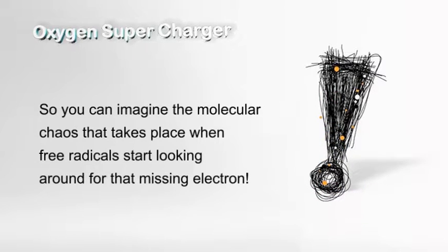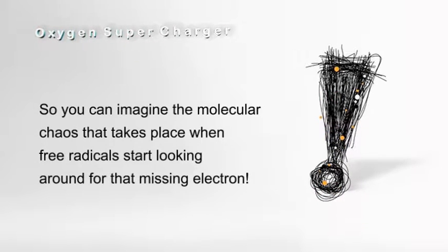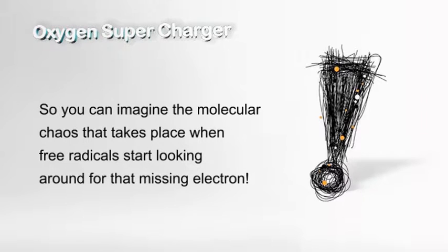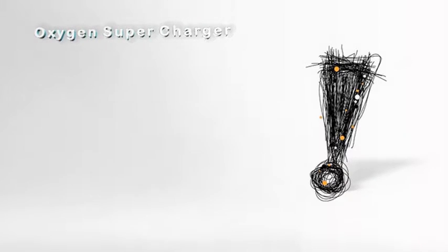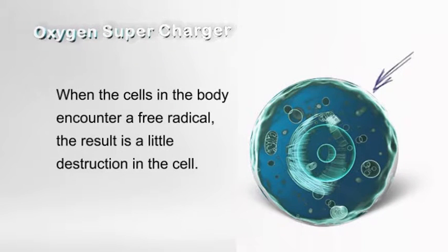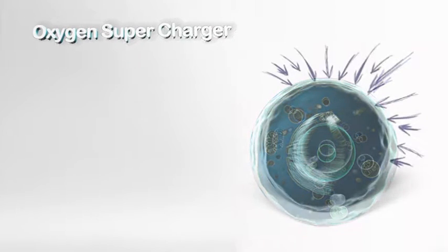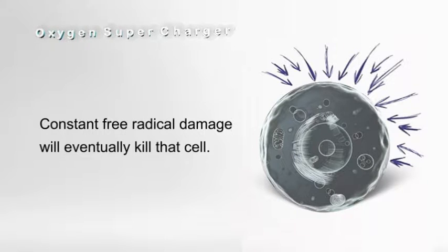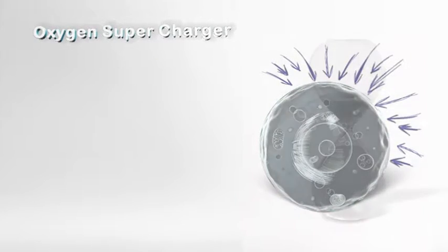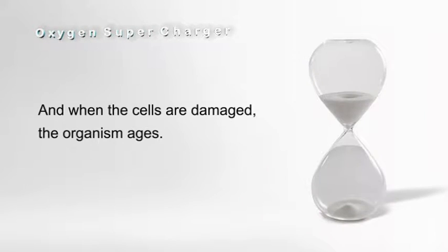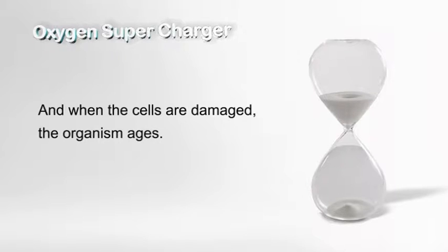Sometimes even producing a chain reaction by creating new free radicals that carry on. You can imagine the molecular chaos that takes place when free radicals start looking around for that missing electron. When the cells in the body encounter a free radical, the result is a little destruction in the cell. Constant free radical damage will eventually kill that cell. And when the cells are damaged, the organism ages.